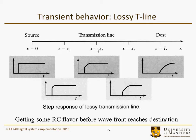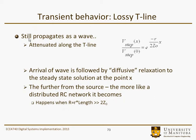If we're far enough down the line, it basically looks like an RC type of time constant. These values would be attenuated by distance down the line, so they probably wouldn't be going to the same height. The signal still propagates as a wave but attenuated along the line, and this is sort of what the attenuation characteristic might look like — an exponential decay with distance and resistance per unit length of the line.